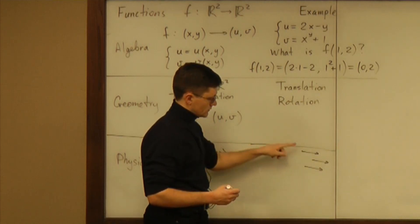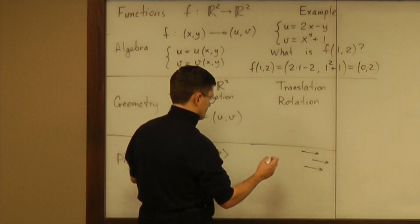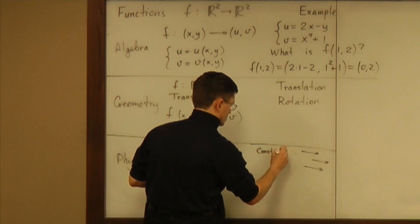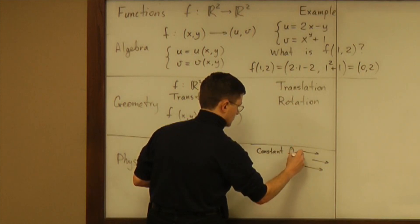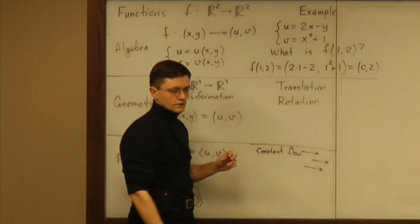So all the vectors assigned to the points are going to be exactly the same. Let's call this constant flow. This flow is the same everywhere in the plane.